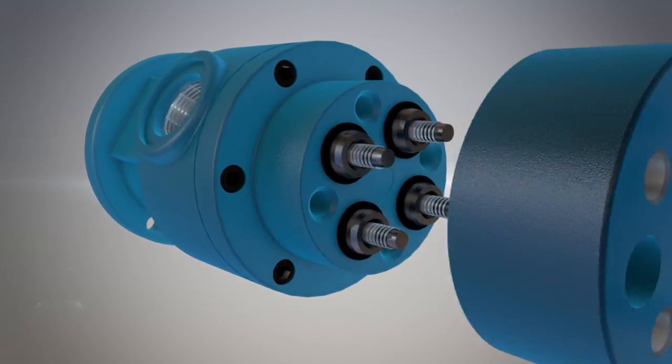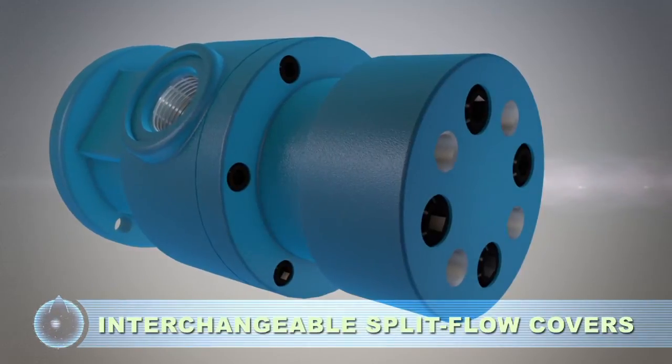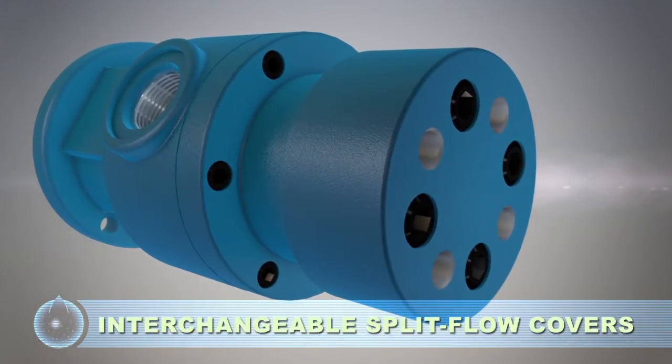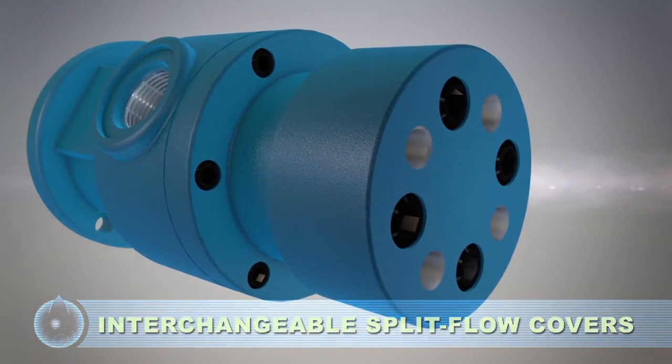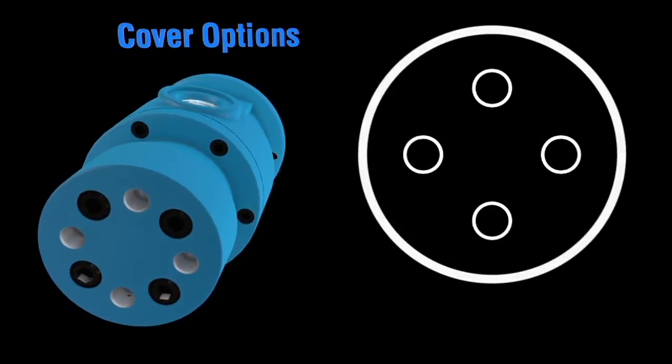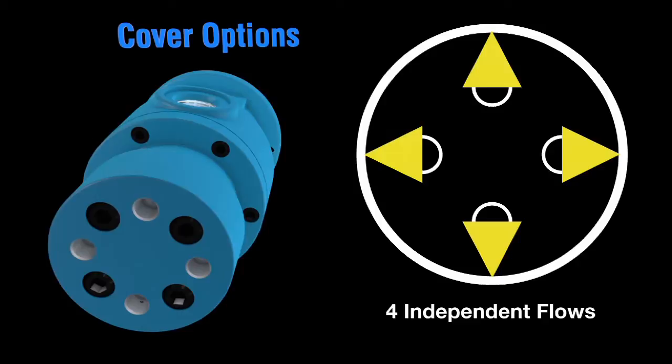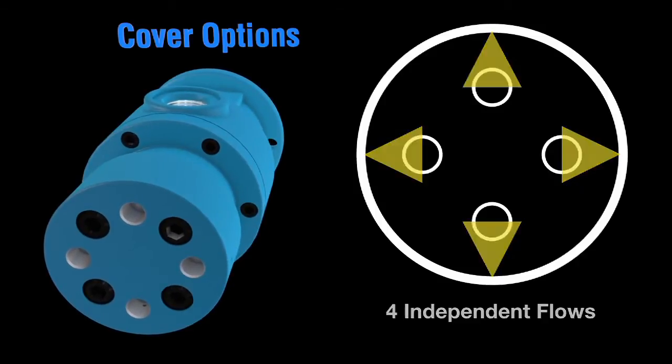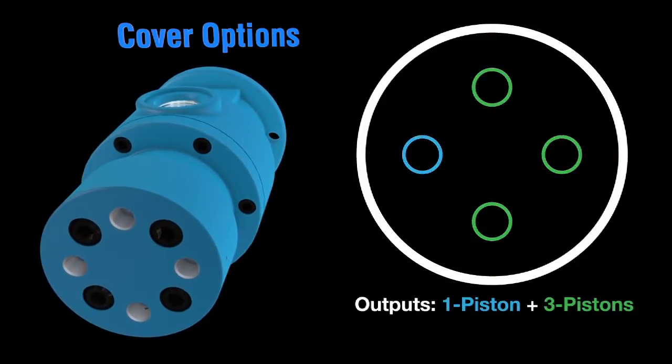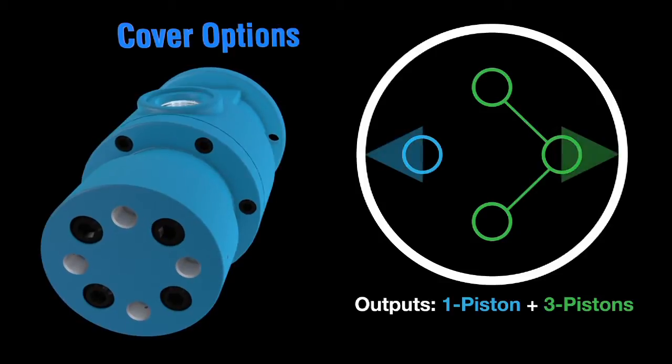Interchangeable split flow covers are used to produce various piston flow splits to match system requirements. For example, a four piston pump can provide four independent output flows, or one piston output from one outlet and three pistons output from the second outlet.